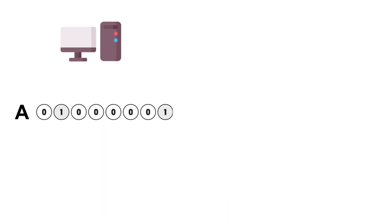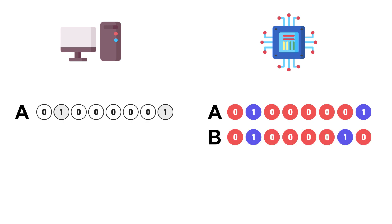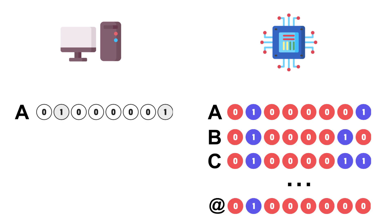This is a classic computer. These eight bits represent the letter A. In a quantum computer, eight qubits represent the letter A, but at the same time they also represent B and C and all the characters that can be represented with eight bits. That's because in superposition, qubits are one and zero at the same time. Qubits are cool.